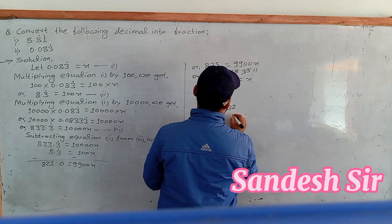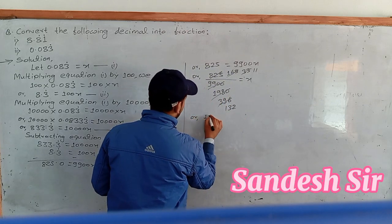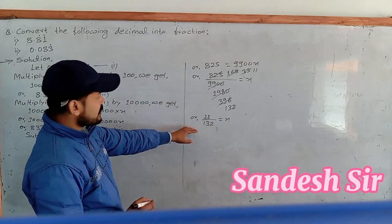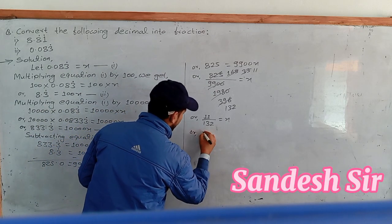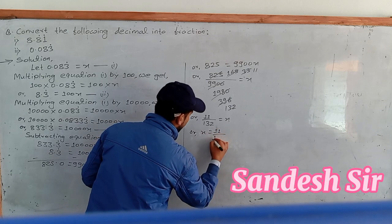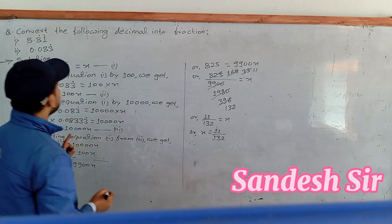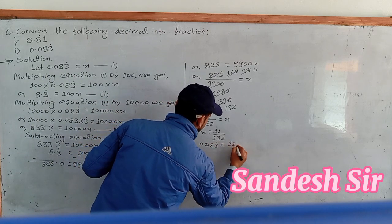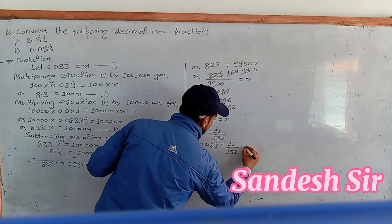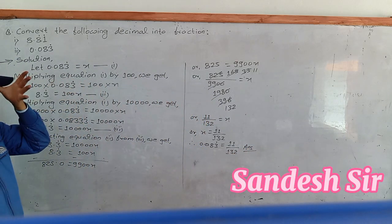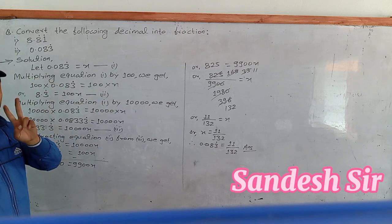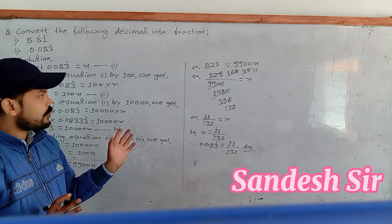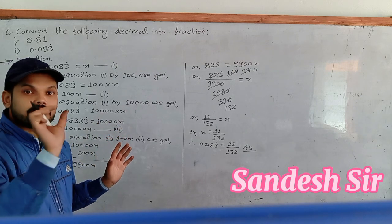Simplifying: 11 divided by 100 times 32 equals x. Therefore x equals 11 by 100. So 0.083 repeating equals 11 over 100. The condition is that the decimal part of the repeating digit is repeated in both examples.